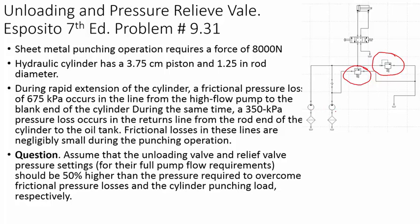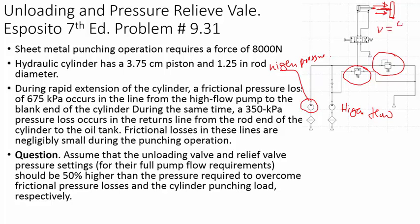The way these two pumps work: this pump is a high-flow pump, and this one is a high-pressure but low-flow pump. Two pumps are used because when this cylinder is extending — going very fast to punch the sheet metal — you need very high speed. To get high speed you need very high flow, since Q equals velocity times area.